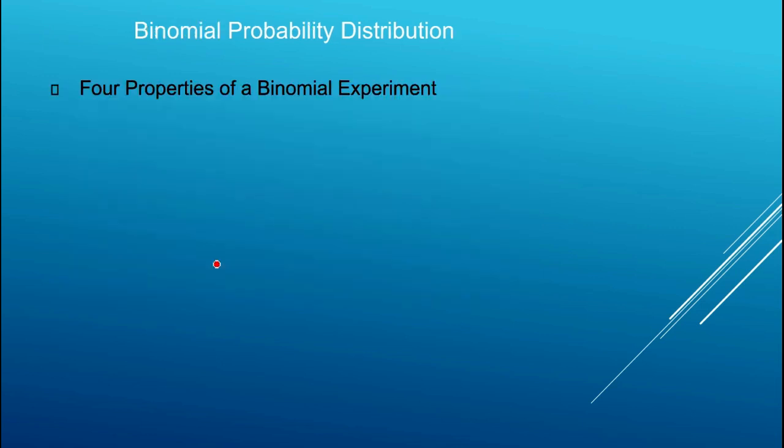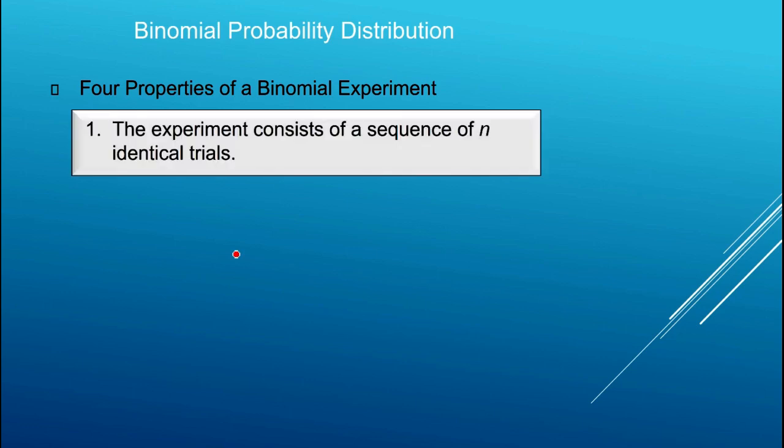For a binomial probability distribution, we're going to talk about a binomial experiment. We're going to go back to the experiment, talk about a random variable defined over the sample space, and then derive a formula that describes the probability function for that random variable. The four properties of a binomial experiment are as follows.